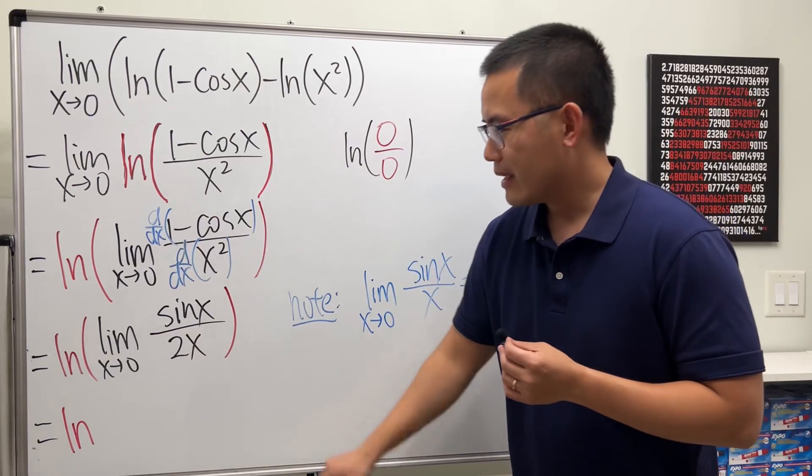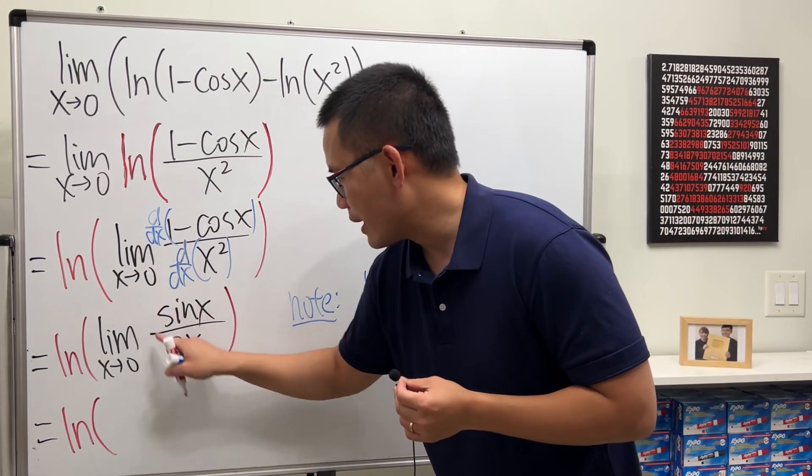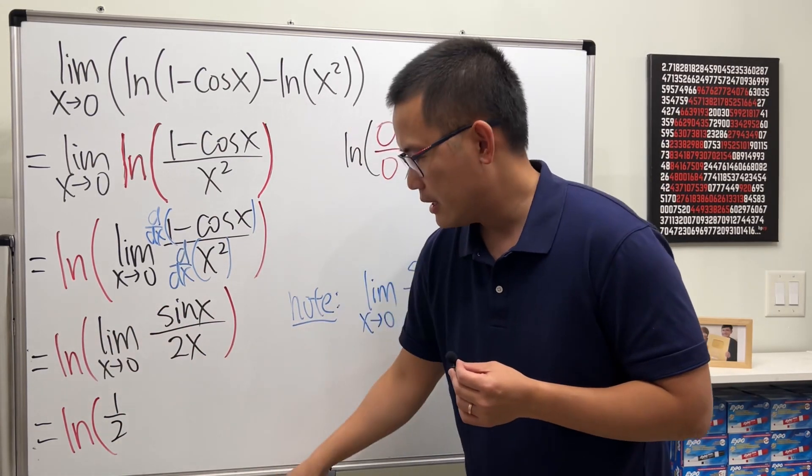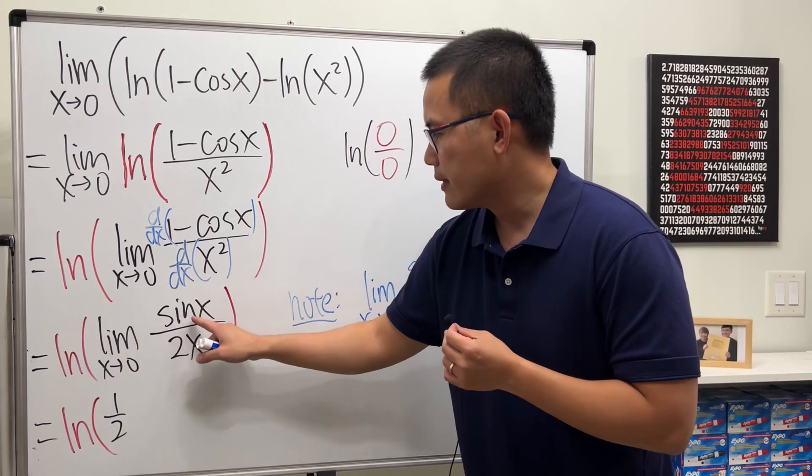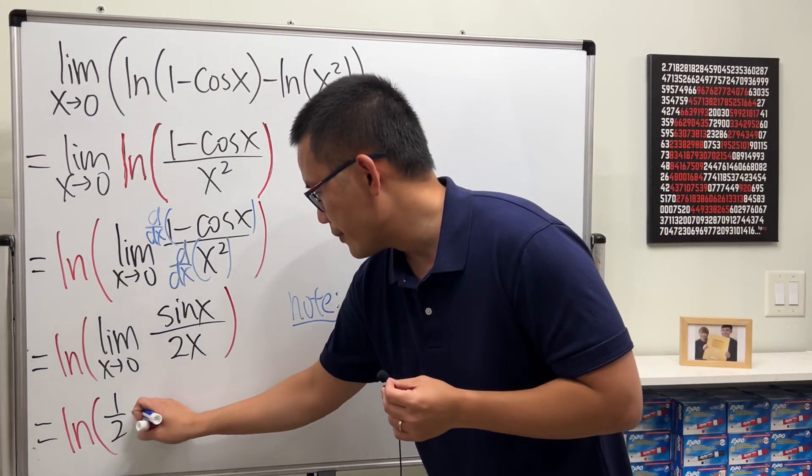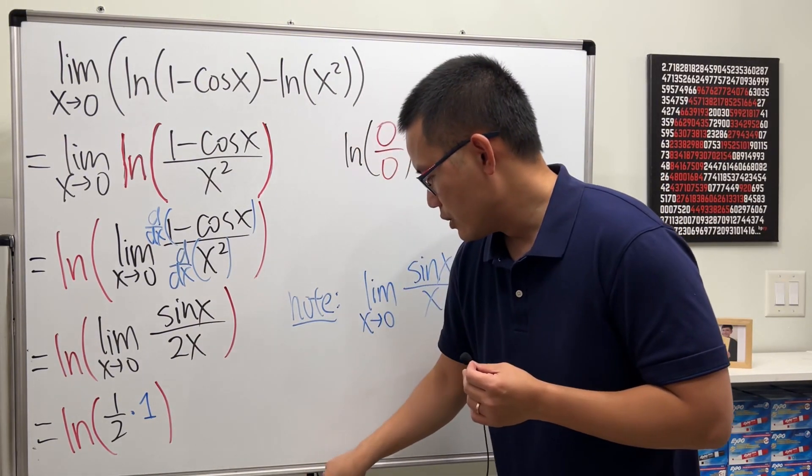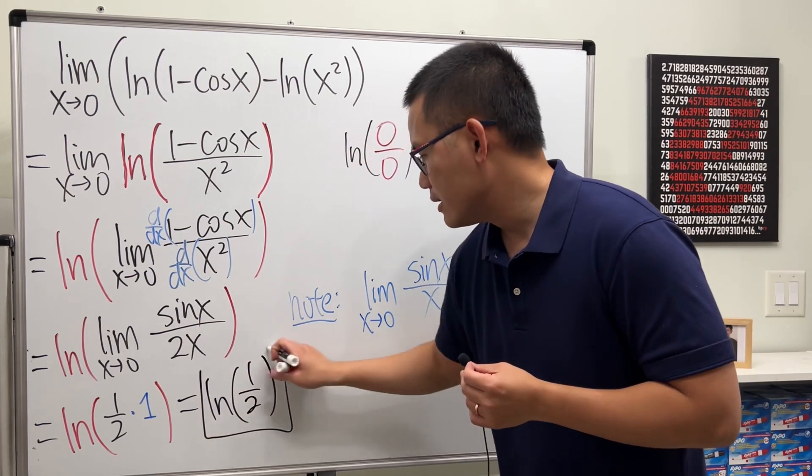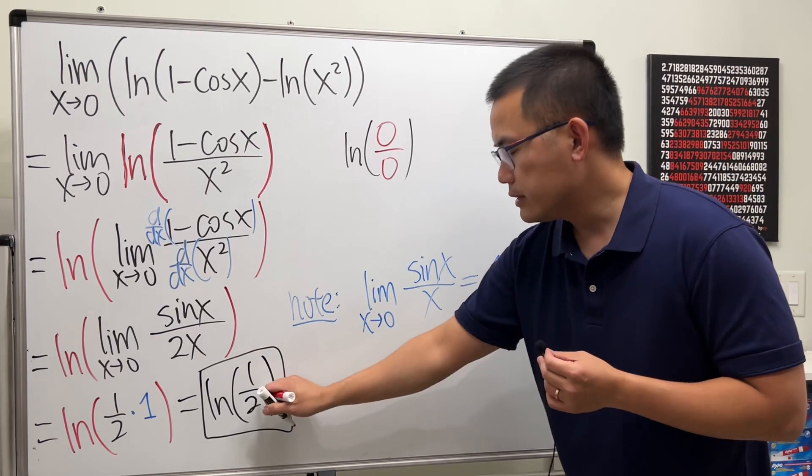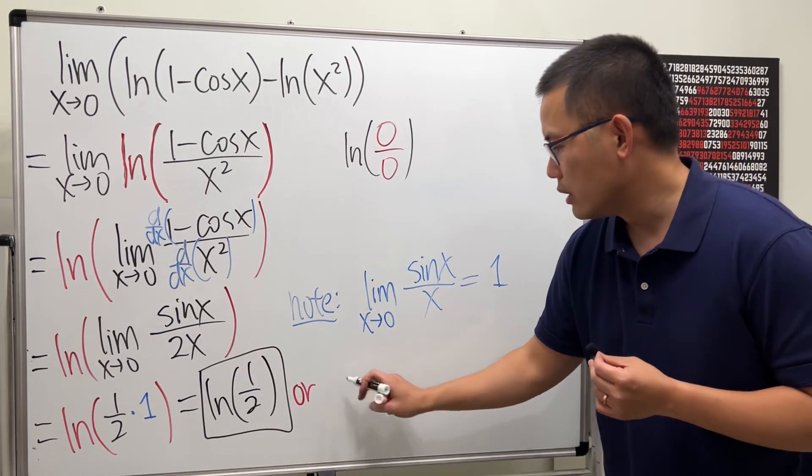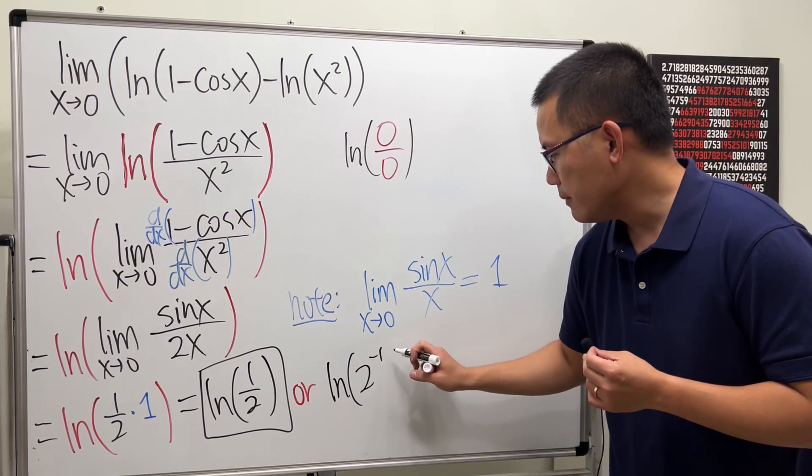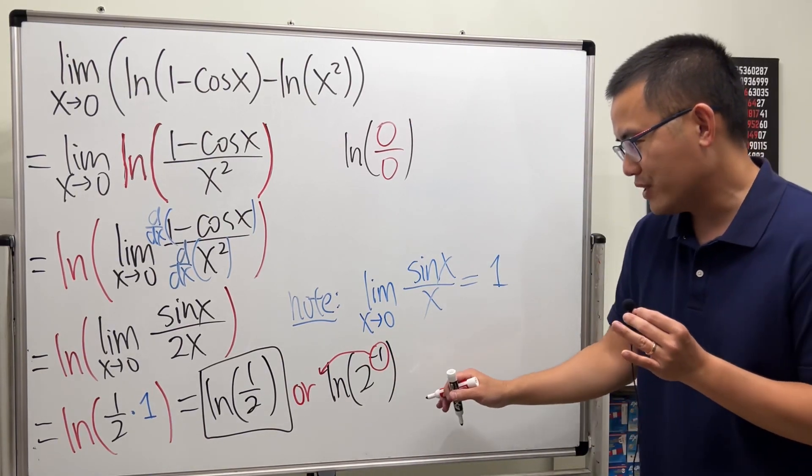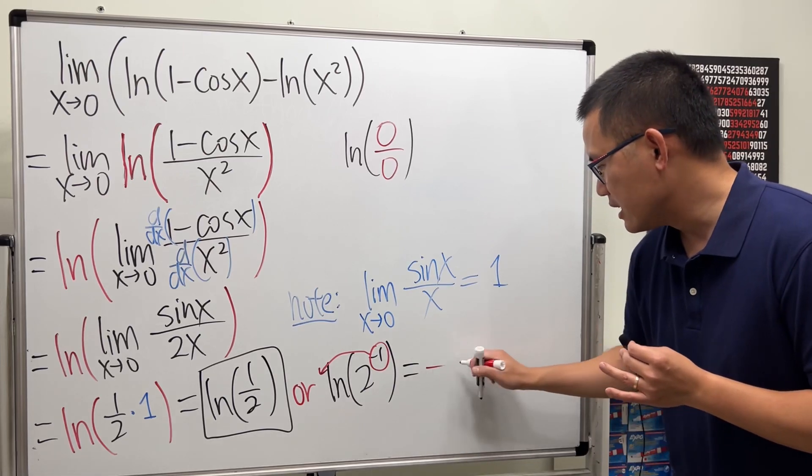So I will have ln right here. Notice we have the one half right here, so I will just put that down right here. One over two can be brought up to the outside, and then the limit as x approaching zero of sine x over x is just one, so it's just one. So in fact, the answer is ln of one half like this. Or notice one half is the same as two to the negative one power, so we can write ln of two to the negative one. Bring the power to the front, negative one. This is just a log property, it's not the power rule for derivative. So you can also write this as negative ln two.